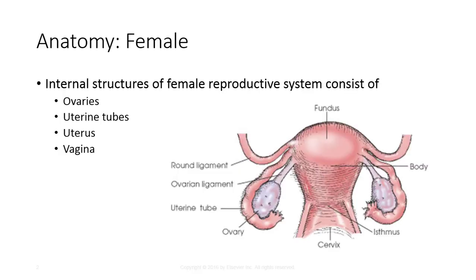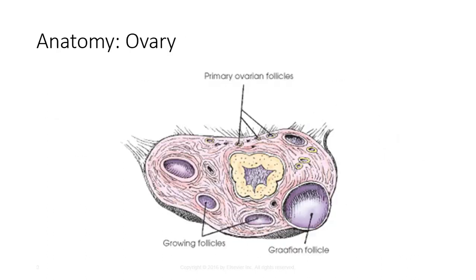Internal structures of the female reproductive system consist of the ovaries, the uterine tubes, the uterus, and the vagina. The ovaries are two small, glandular, almond-shaped organs located one on each side near the lateral wall of the pelvis. Internal secretions control the menstrual cycle, while externally they secrete ova, the female reproductive cell.